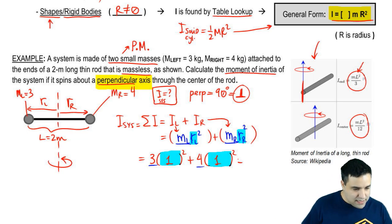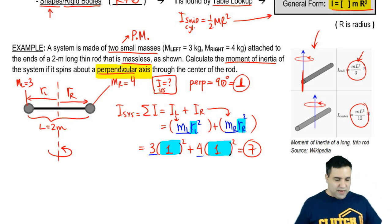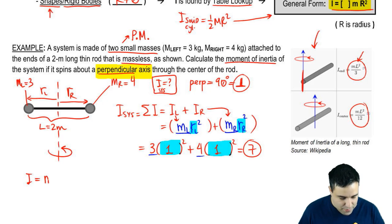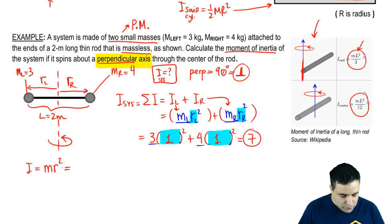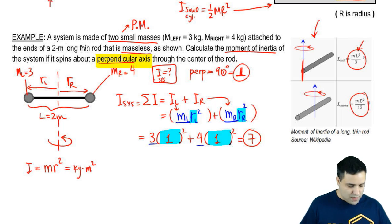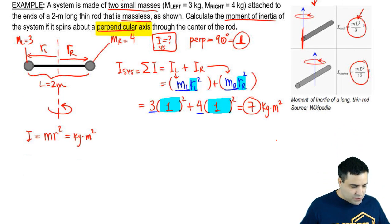One square is just one. So the answer here is simply seven. Now let's talk about units, because we haven't done that yet. If you look at I equals MR squared, which is the I for a point mass, the units are going to be kilograms because of the mass, and meters squared because of the distance squared, distances in meters. So it's going to be seven kilograms meter squared.